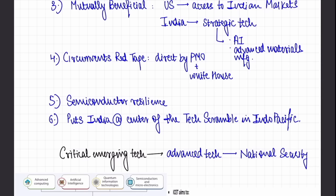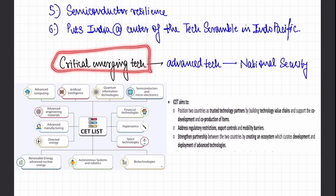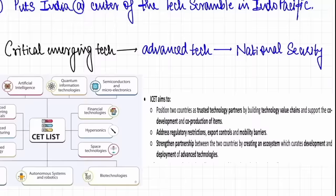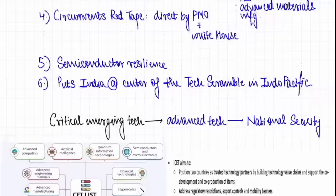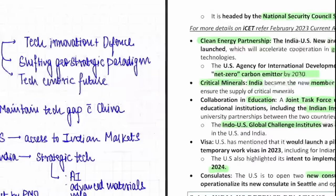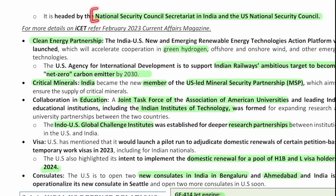ICET is basically an innovation bridge for technological innovation and defense partnership. It reflects the shifting geostrategic paradigm where the Indo-Pacific is a very important geostrategic area, and ICET shows the US commitment to empower its allies in the Indo-Pacific market. There is a focus on technology, and the US is determined to maintain a technology gap with China — therefore this initiative between India and USA especially focuses on emerging and critical technologies that can be used in national security. It is mutually beneficial: the US gains access to Indian markets, and India gains strategic technology like AI and advanced materials manufacturing. It circumvents red tape as it is directly monitored by the PMO and the White House. It also focuses on resilience of semiconductor supply chains.